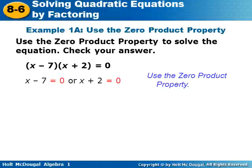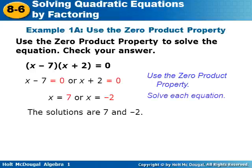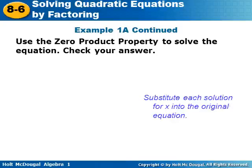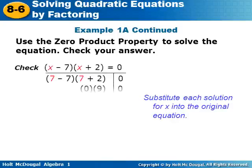Since we don't know which one, we solve for both, and we get x equals seven or x equals negative two. Then when you check your answer, you substitute the solution for x into the original equation. If we tried seven first, we would get seven minus seven times seven plus two, which is zero times nine, and zero equals zero.